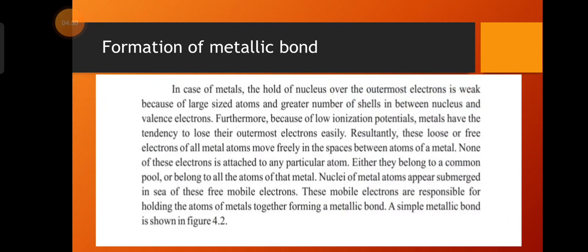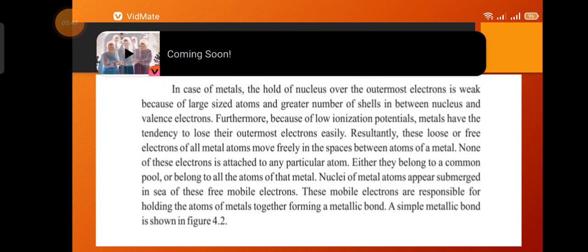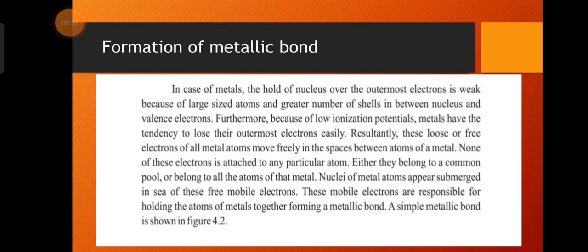The next heading is formation of the metallic bond. In the case of metals, the hold of the nucleus over the outer shell electrons is weak because of the large atomic size and greater number of shells between the nucleus and the valence electrons. More shells cause greater shielding effect, which weakens the nucleus's hold on the outer shell, so outer electrons can be removed easily.